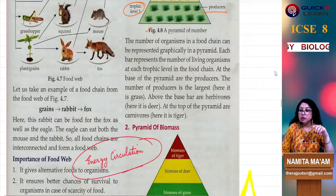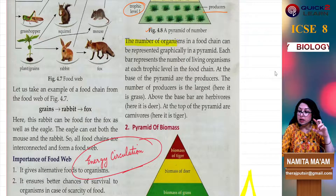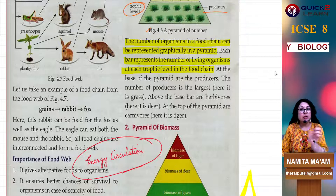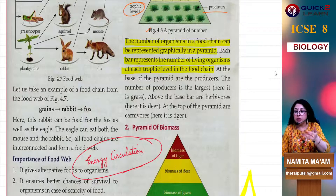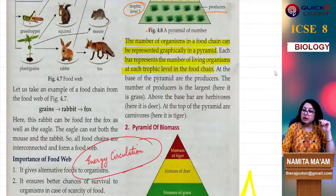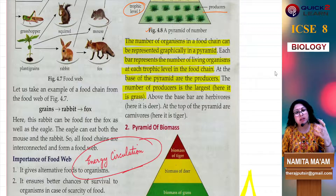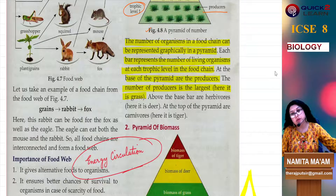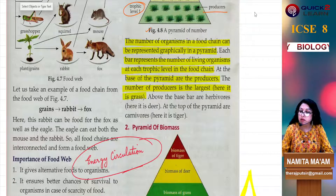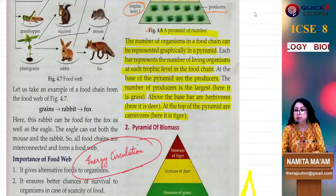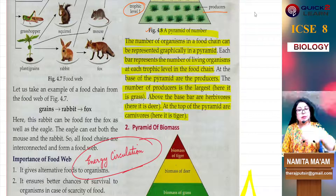The number of organisms in a food chain can be represented graphically in a pyramid. Each bar represents the number of living organisms at each trophic level in the food chain. At the base of the pyramid are the producers — the number of producers is the largest. Above the base bar are the herbivores, here the deer. At the top of the pyramid are the carnivores — that was the tiger. So here the numbers are going to reduce.